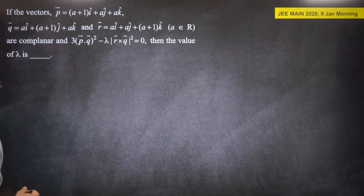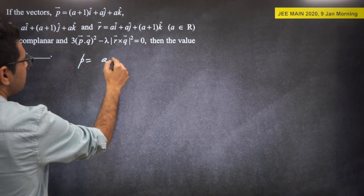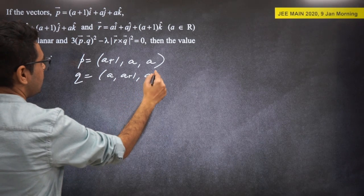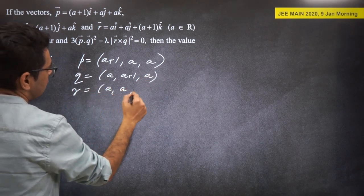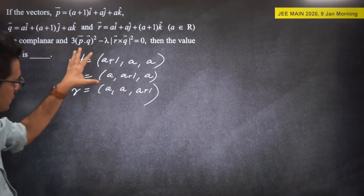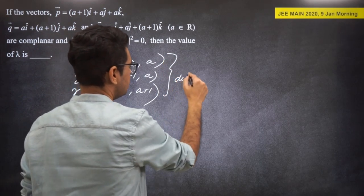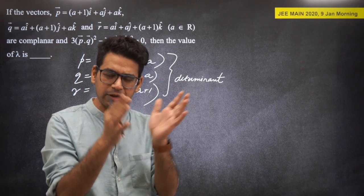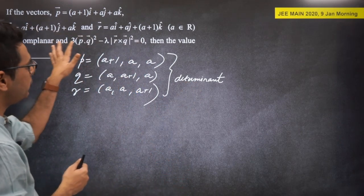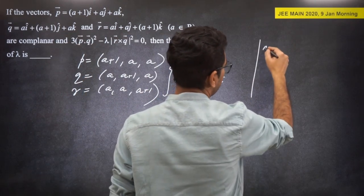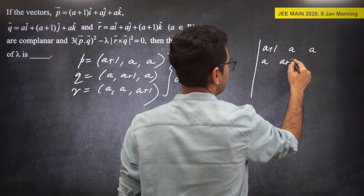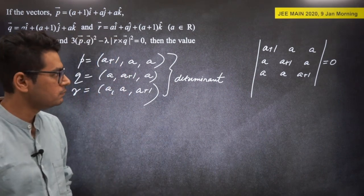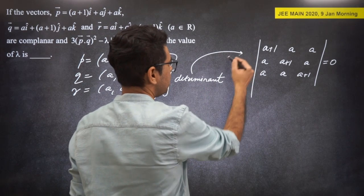Vectors P = (A, A+1, A), Q = (A, A, A+1), R = (A+1, A, A) are given in triplet form — notice the symmetry. If P, Q, R are coplanar, the condition is that the determinant |A A+1 A; A A A+1; A+1 A A| = 0. As predicted, the determinant gives a symmetric matrix.